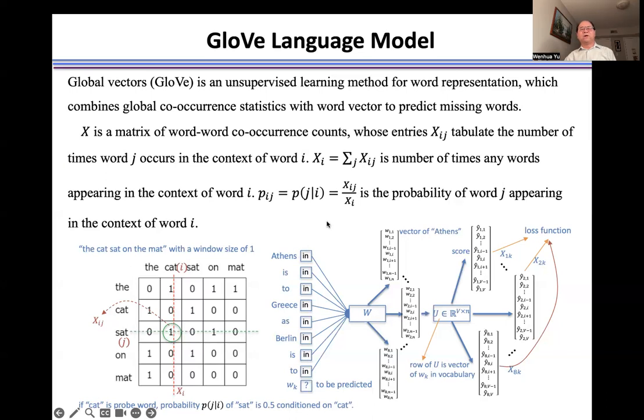The idea of the GloVe language model is to use some words as input to predict the missing words. Here, we use the matrix W to map the input words to vectors in feature space. And then we define the matrix U, whose rows are vectors corresponding to each word in the vocabulary.